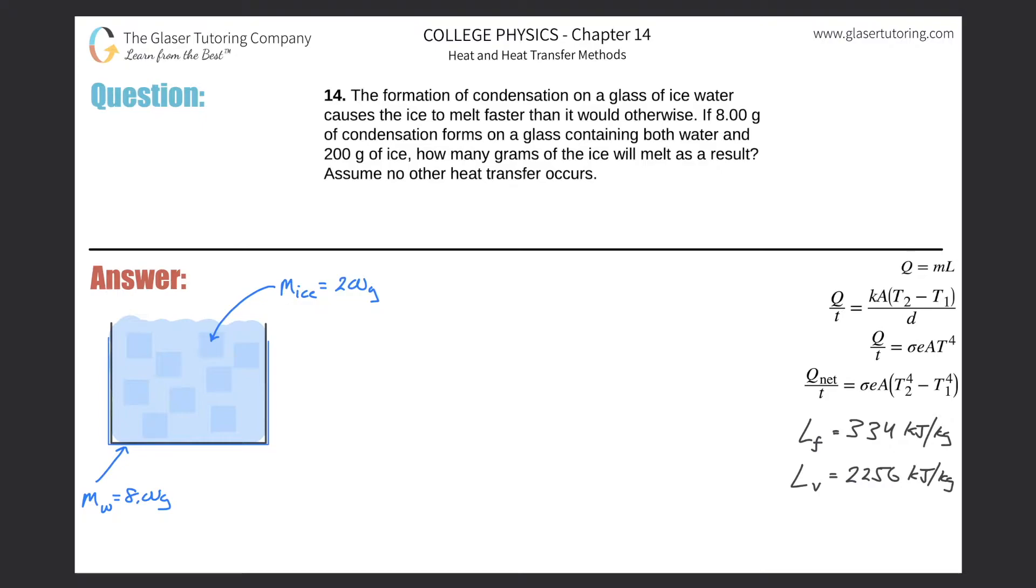Number 14: The formation of condensation on a glass of ice water causes the ice to melt faster than it would otherwise. If eight grams of condensation forms on a glass containing both water and 200 grams of ice, how many grams of the ice will melt as a result? Assume no other heat transfers occur.